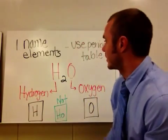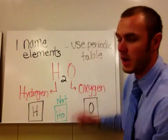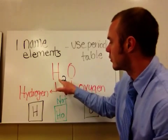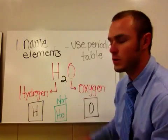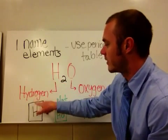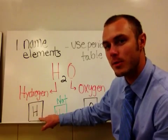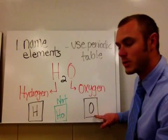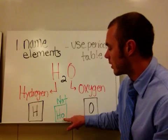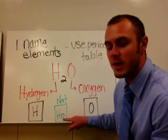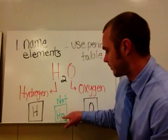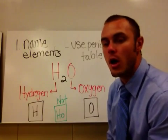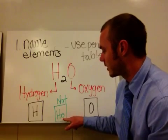The first step is to name the elements. For this we're going to use our periodic table, which you can find in the back of the book or pretty easily with an internet search. If we look at the molecule H2O, your letters are your elements. H stands for hydrogen and O is oxygen. Note that a capital H with a lowercase o would be a different element — that would be holmium. All capital letters are elements, and if you see a capital and a lowercase together, that's a different element.